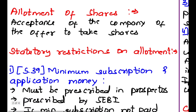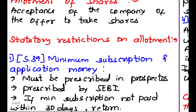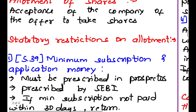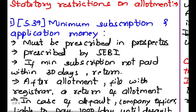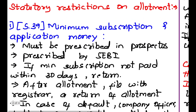Statutory restrictions on allotment. What are the statutory restrictions on allotment — when the company is restricted on accepting an offer of shares, someone buying a share? The first is minimum subscription and application money under Section 39.